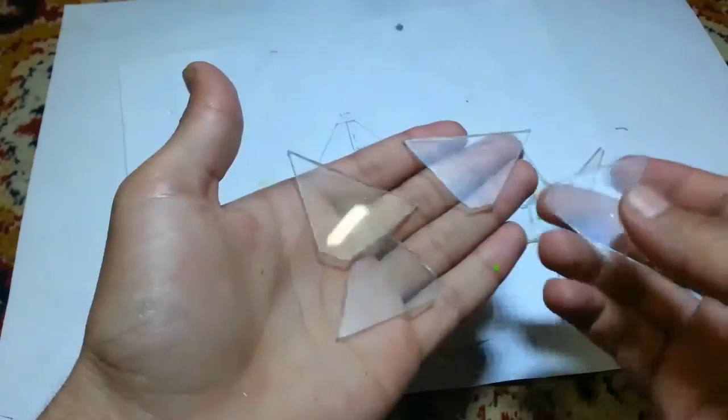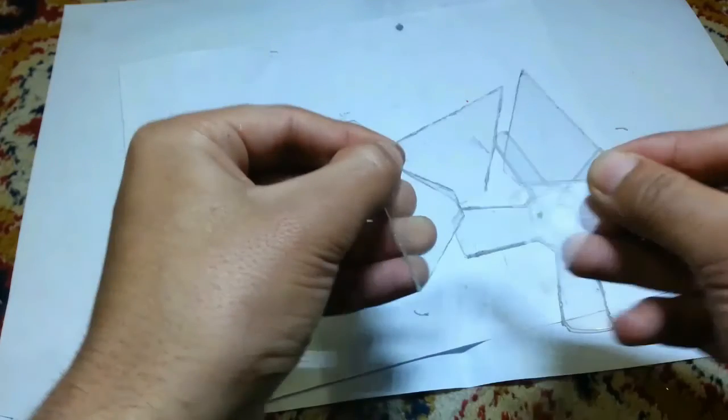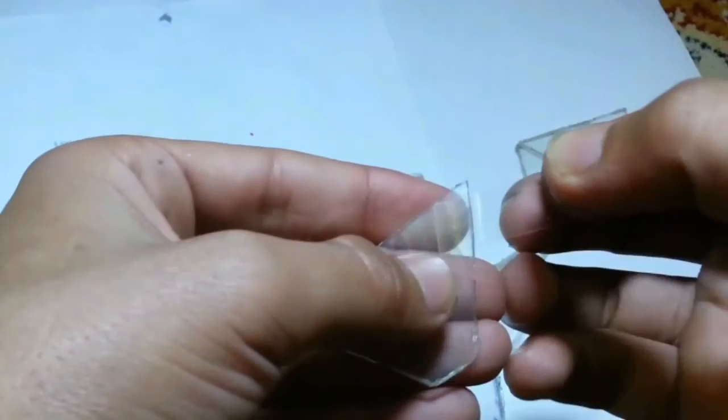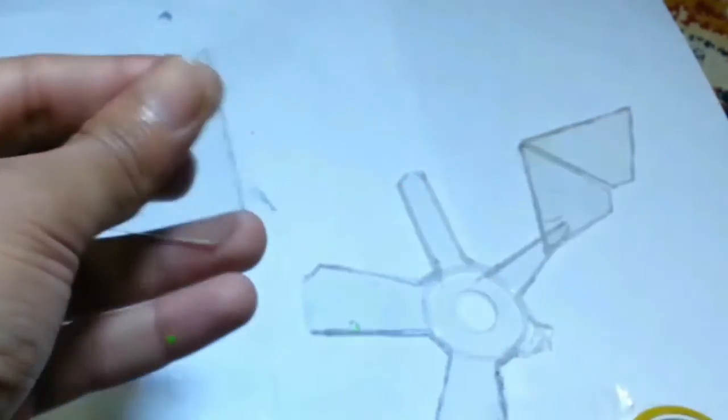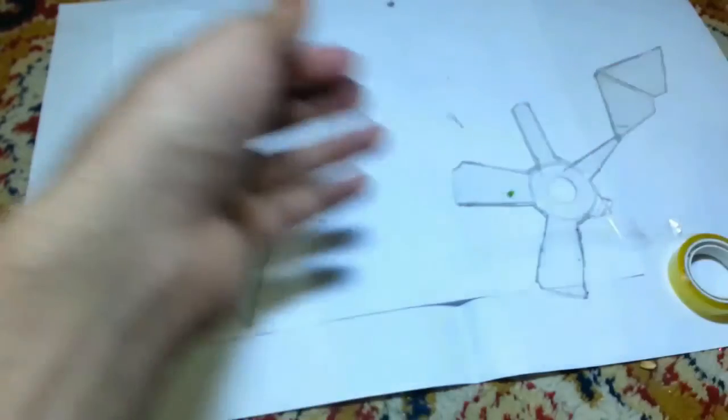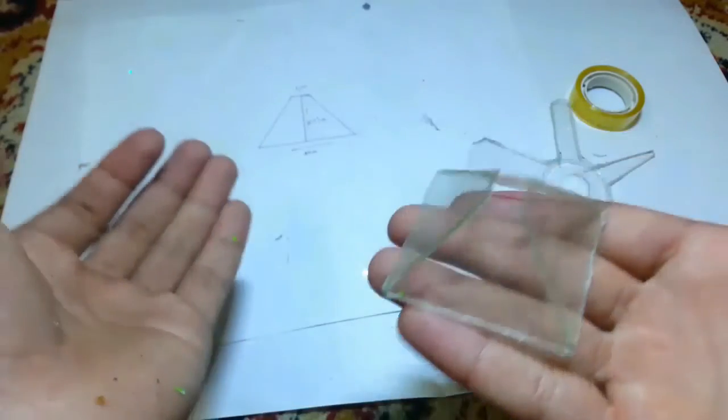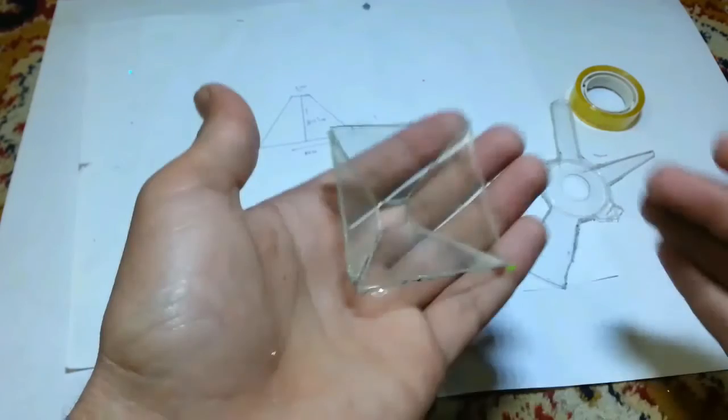And now we have to fasten it together like this, a pyramid. The first and second one, and then others, and then all together. And now we got the pyramid, a hologram projector. Now put that on your phone screen and you will get holograms.